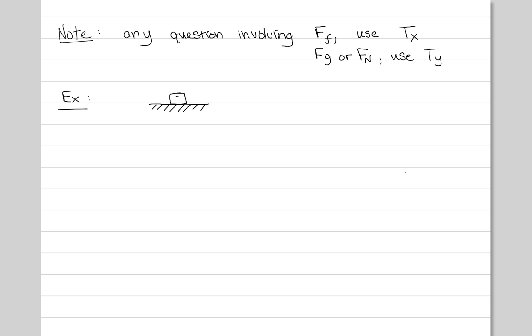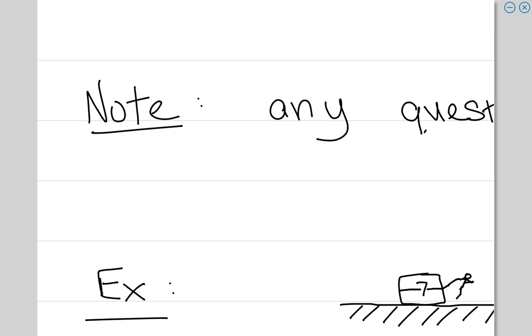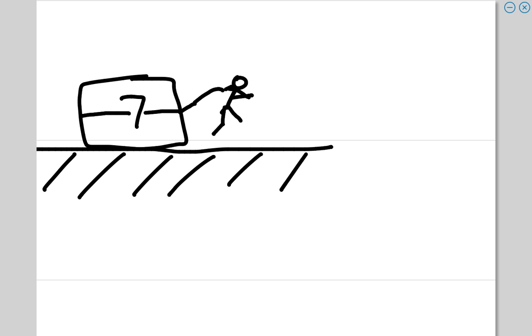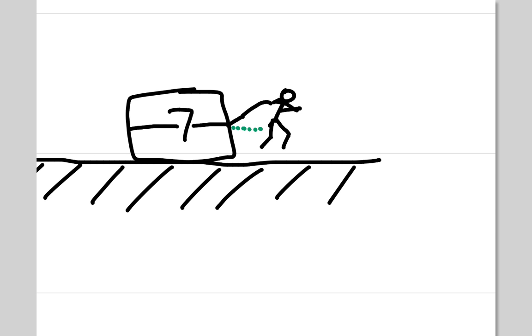So you just have a mass on a flat surface like this. And let's say the mass is seven kilograms. And let's say there's a rope around this mass and attached to that rope is you pulling. So let's draw a stick figure, get the rope in his hand.